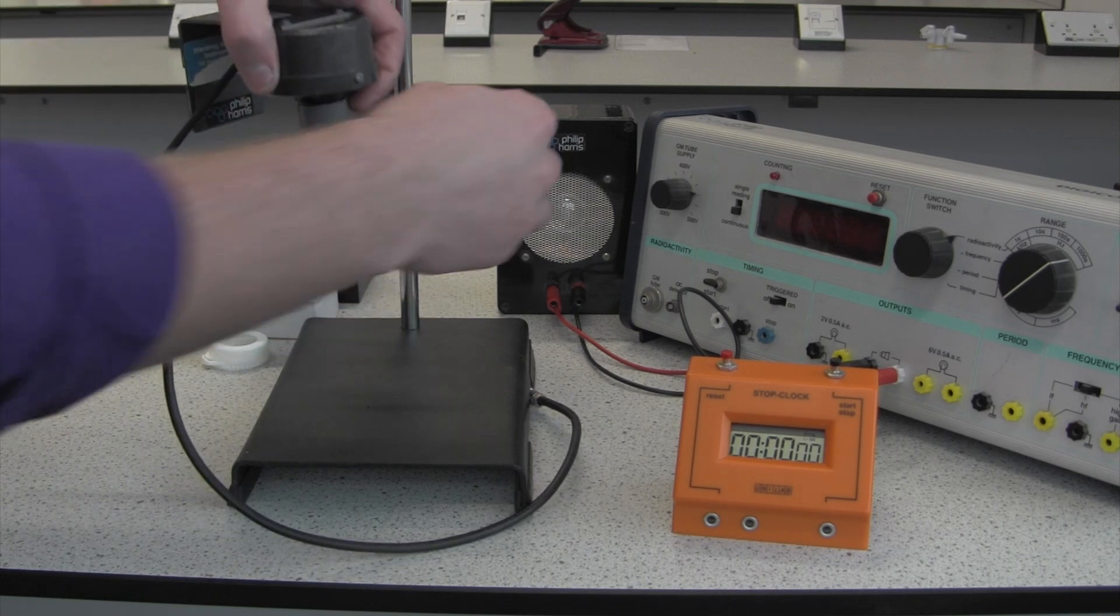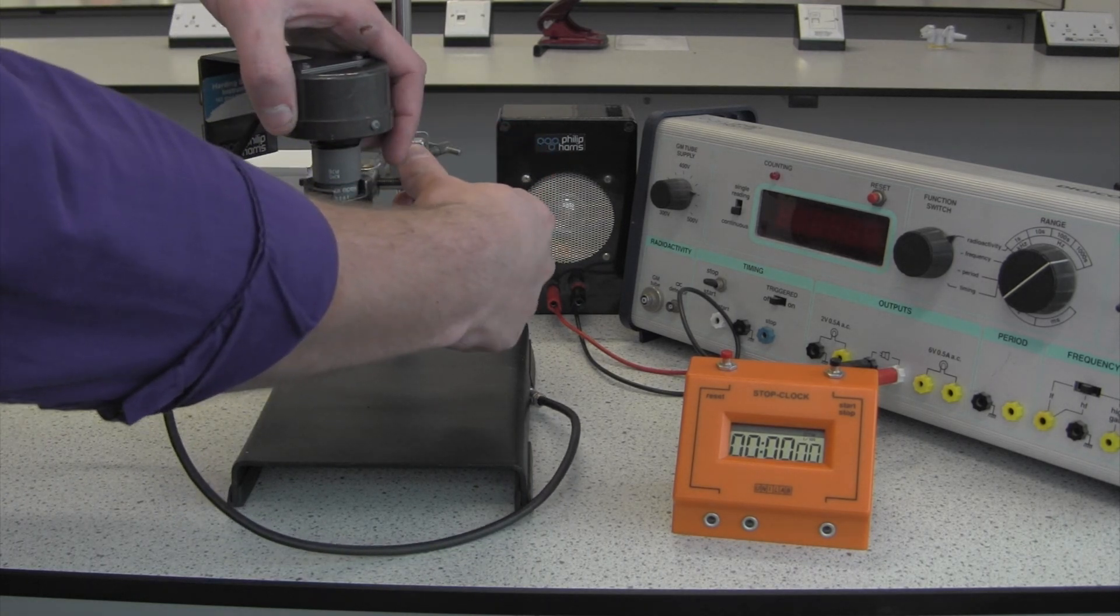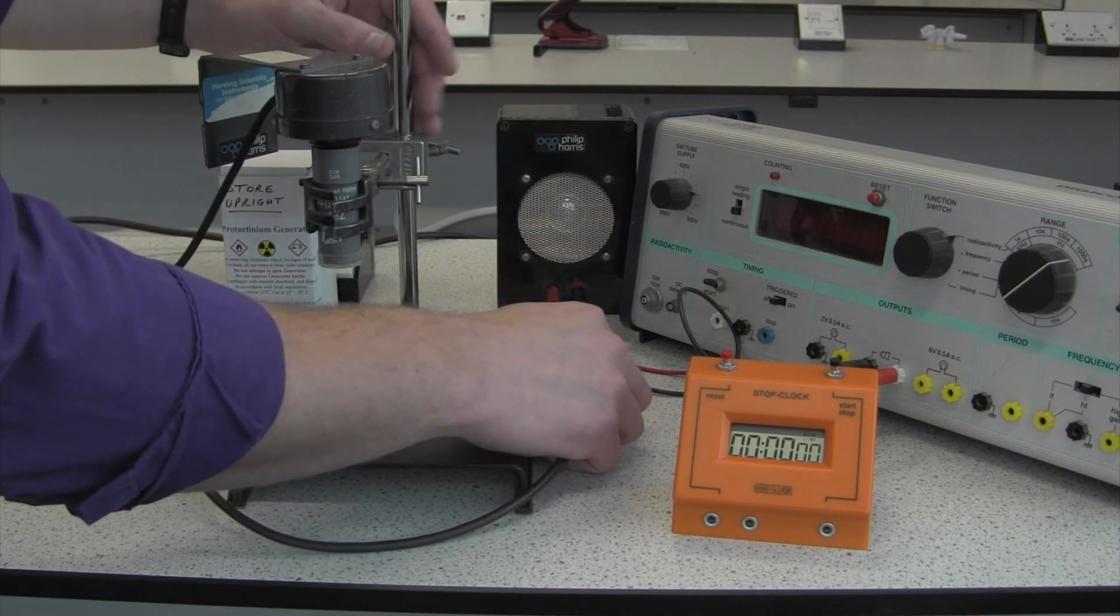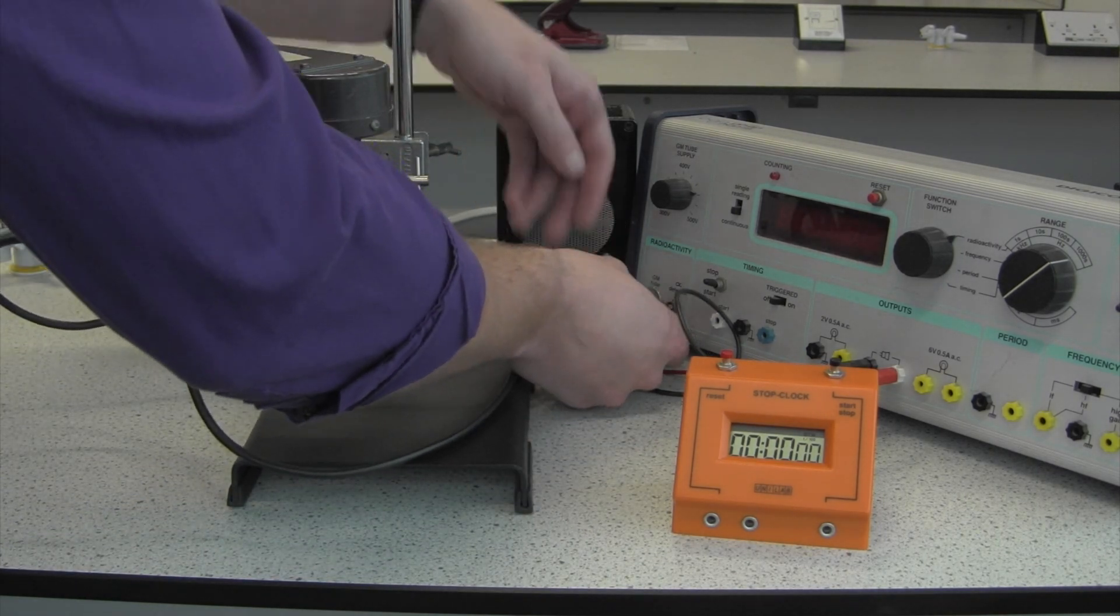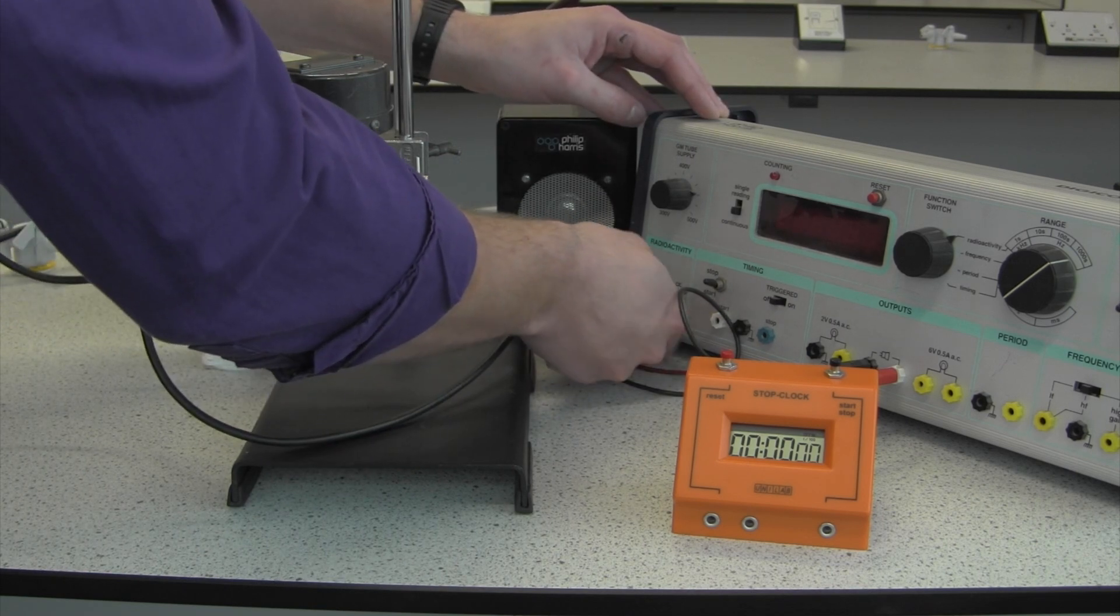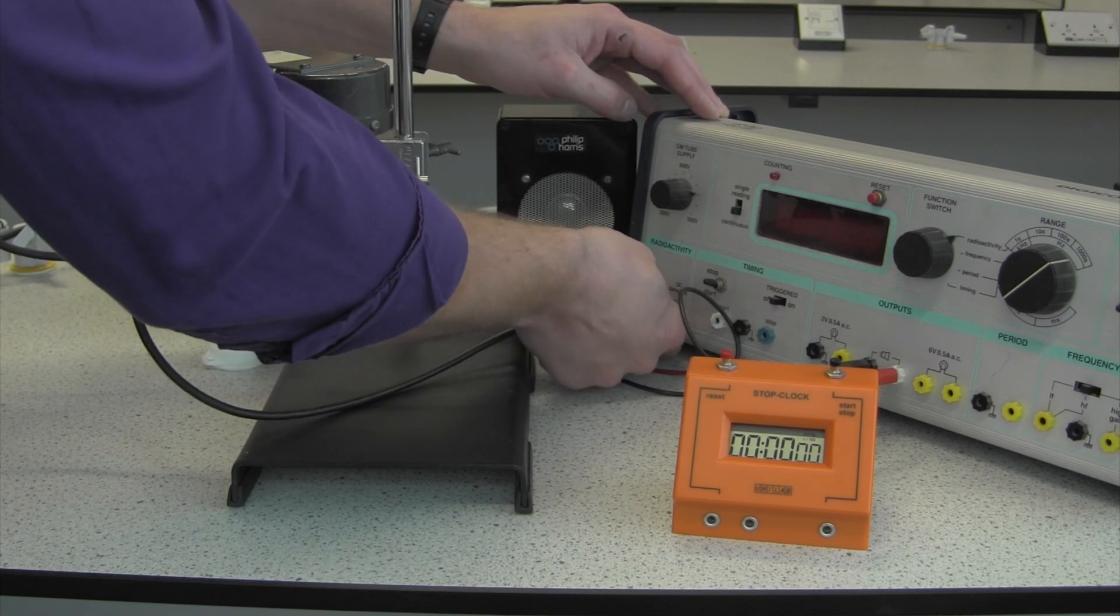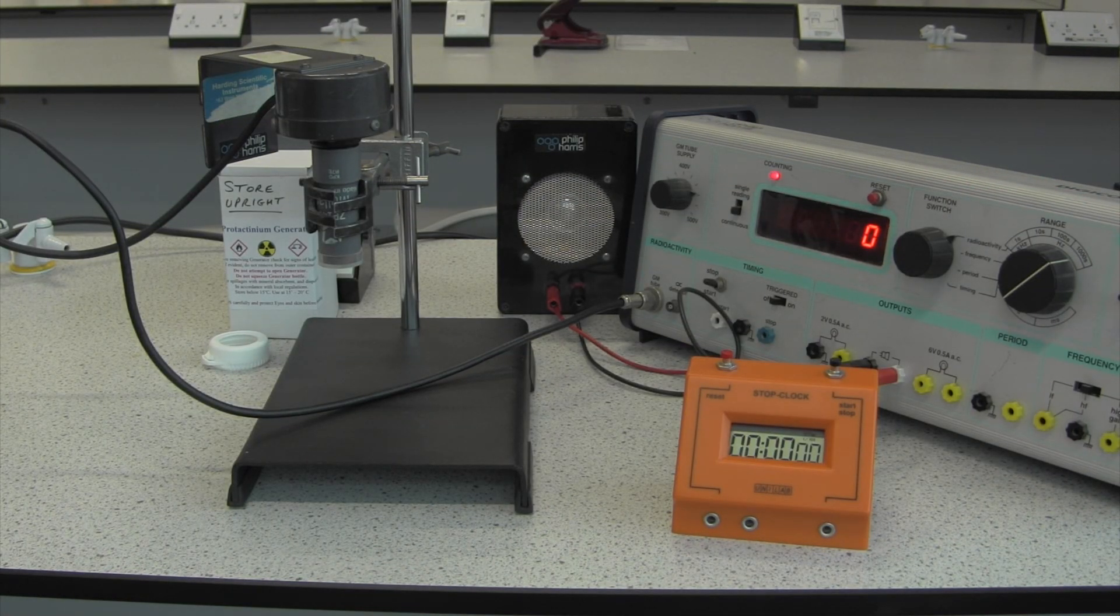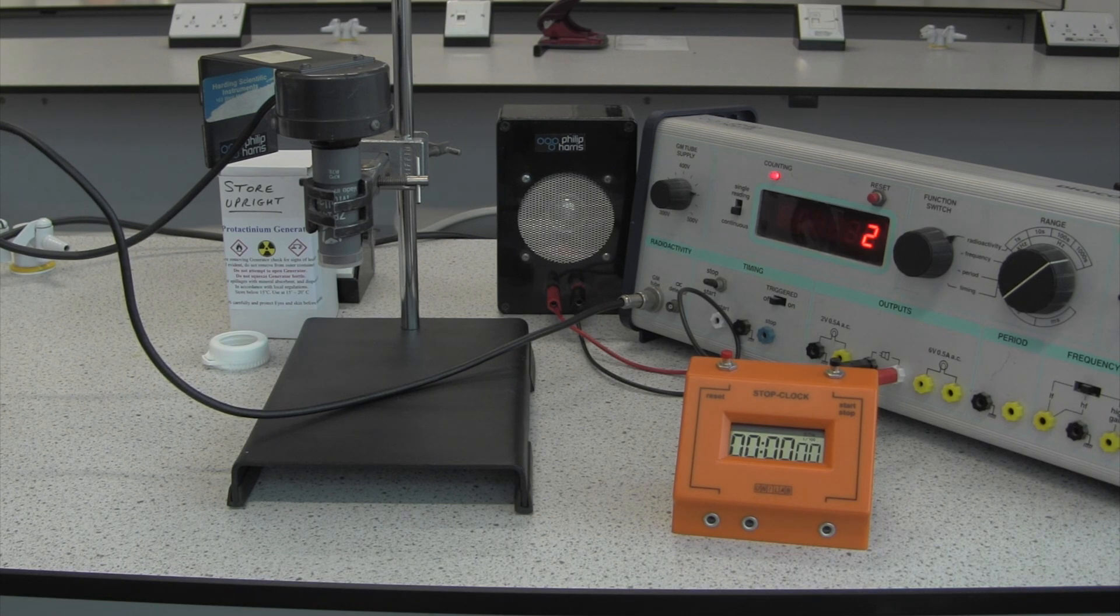And we're going to position that holder in the position that our protactinium generator is going to be in. Plug our Geiger-Muller tube into the Geiger counter. Switch it on. And we should see that we're counting the background radiation.